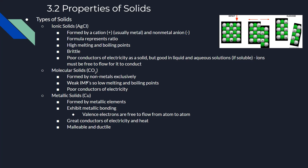Metallic solids, such as copper, are formed by metallic elements and exhibit metallic bonding. Valence electrons are free to flow from atom to atom, allowing electricity to conduct extremely well. Metallic solids are also extremely malleable and ductile. Examples include copper, silver, iron, and steel.